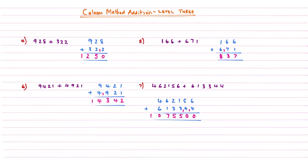It really does pay to write your carried numbers tiny in the column that they relate to. You will see further on down the line, when you encounter the column method multiplication playlist, that it really does pay to have a well-organised system for how you do your carries. If you get organised now, it saves lots of problems later on, and whoever's marking your work will absolutely love it because it's so clear to see.